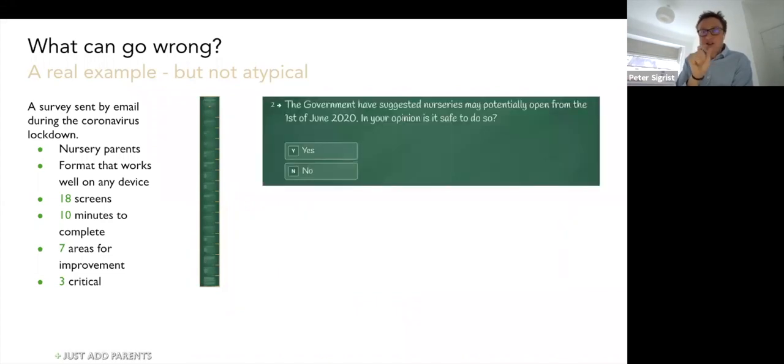The second issue here: this is question two, bear in mind, so quite a bad place for this issue to arise. The issue here will jeopardize completion rates. This is a question about opinions. It's framed as asking for an opinion, but opinions about safety in a coronavirus pandemic: 'Is it safe for children to return to our setting?' The problem here is a very classic problem for survey design. It offers yes and no choices and doesn't offer a 'don't know' choice.